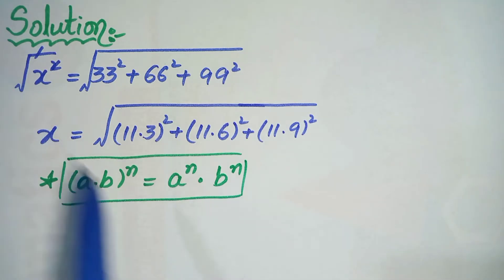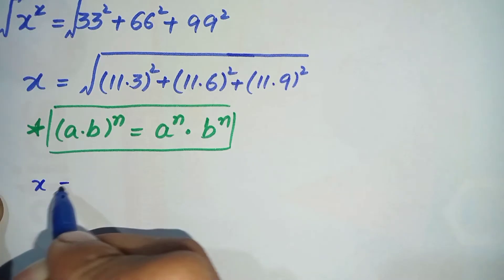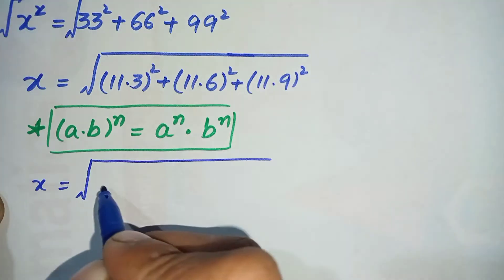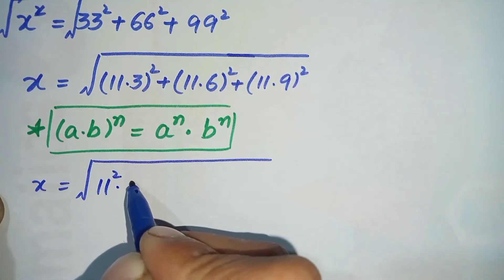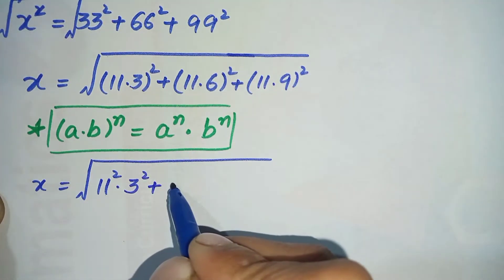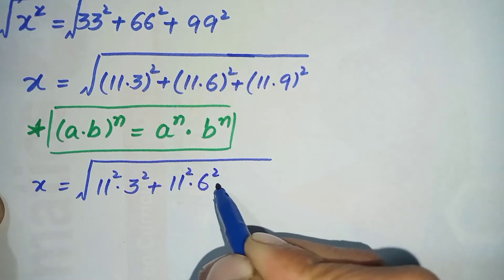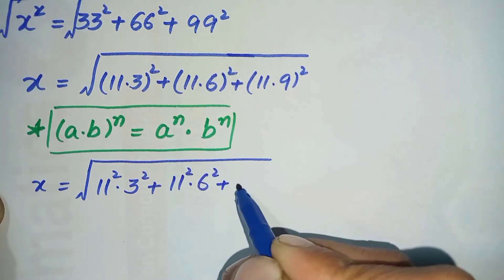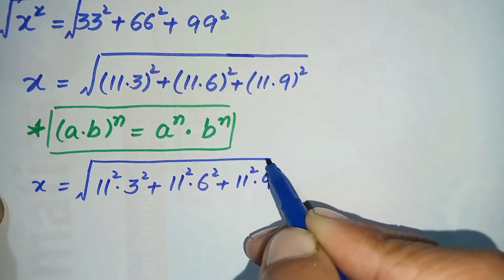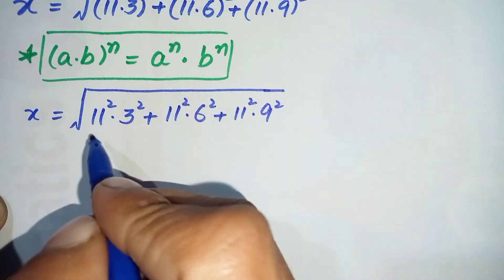By using this exponential formula on these three terms, the equation will become: x is equal to the square root of 11 squared times 3 squared, plus 11 squared times 6 squared, plus 11 squared times 9 squared.